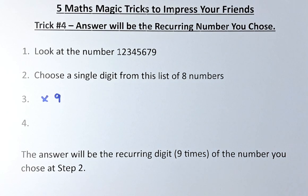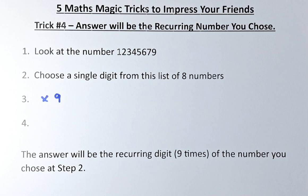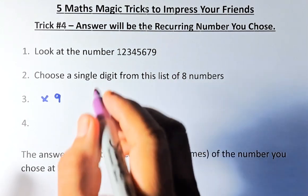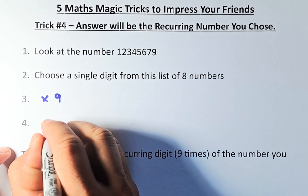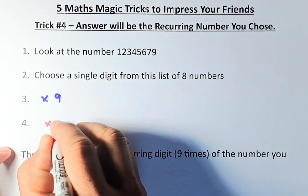Have you done that? Great! Now the next step you are going to do is multiply that result again. You are going to multiply by 12,345,679 in the calculator.